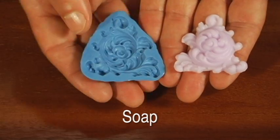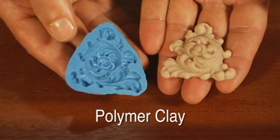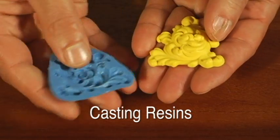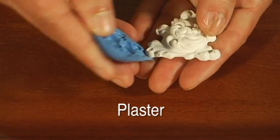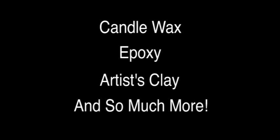Silicone plastique works well with many non-food materials also like soap, polymer clay, casting resins, plaster, candle wax, epoxy, artist's clay, and so much more.